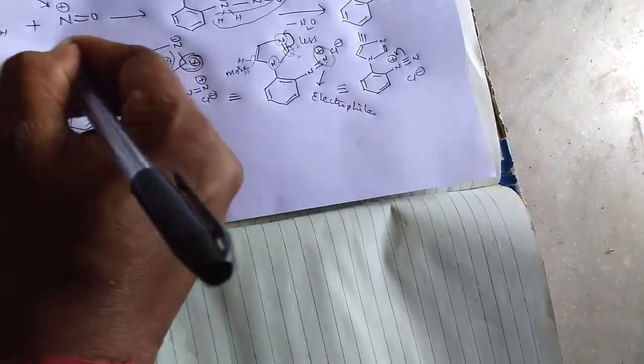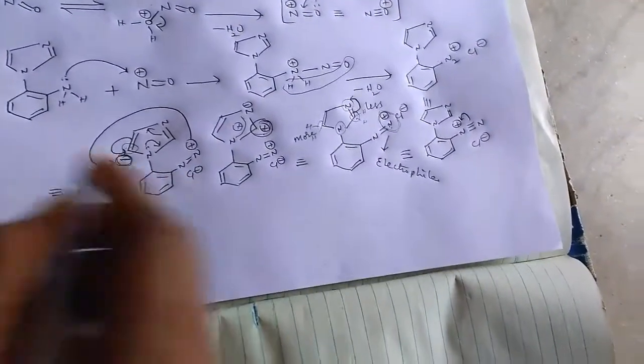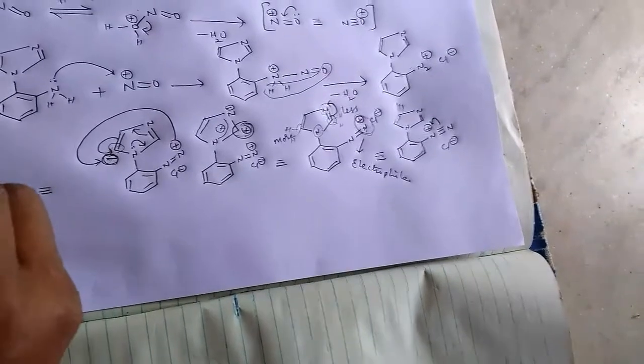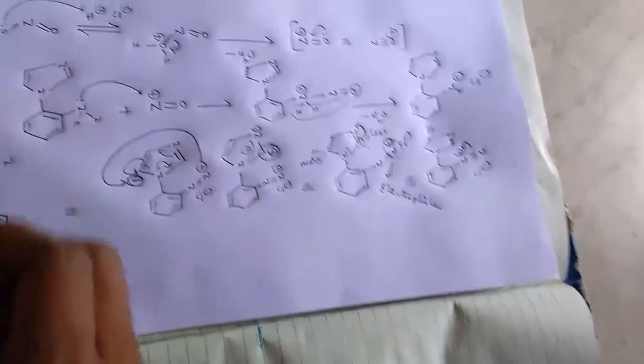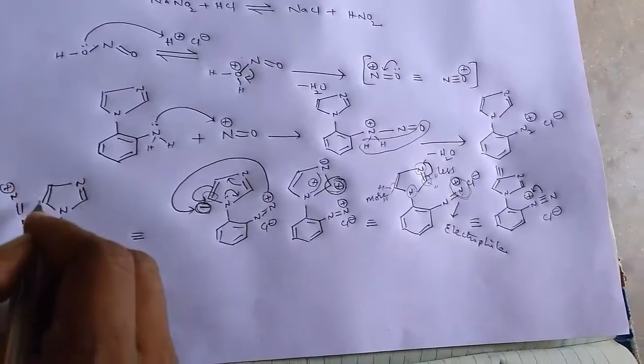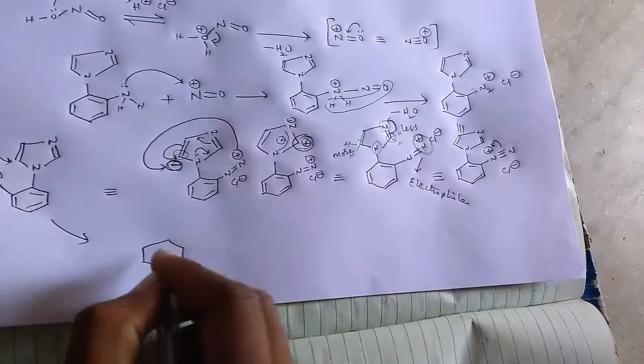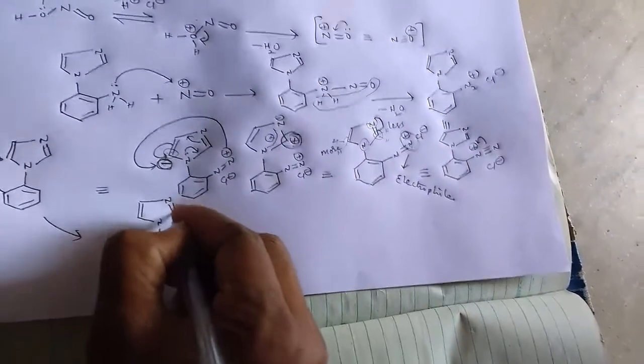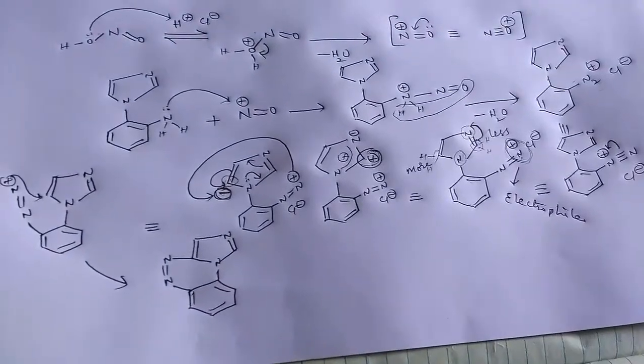This attacks on here. That means the ring flipping takes place here. By that we can get, by the ring flipping, N double bond... The electrophile attacks here, so from this we can get... So this is the final product we can obtain.